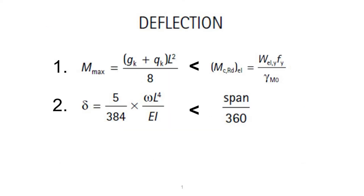The limitation for this beam is taken as span over 360. The National Annex to EC3 recommends that checks on the vertical deflections under unfactored imposed loading should be carried out. First, we need to determine the maximum bending moment under unfactored load. We must ensure that the maximum elastic bending moment is lesser than the elastic resistance bending moment. Next, calculate the theoretical vertical displacement by applying the appropriate formula. Finally, check whether the calculated vertical displacement is lesser than the allowable given in the annex.